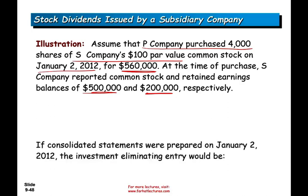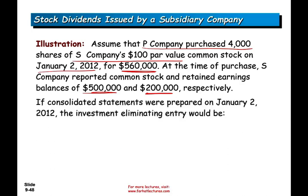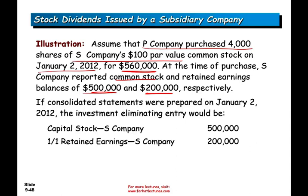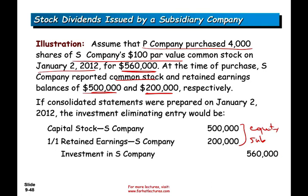Assume we prepared the consolidated financial statement as of January 2nd. We need to remove common stock — debit capital stock for the sub company. We need to remove their retained earnings because the equity for the sub needs to be eliminated. We eliminate them against the investment account because we paid $560,000, and we establish a non-controlling interest of $140,000.